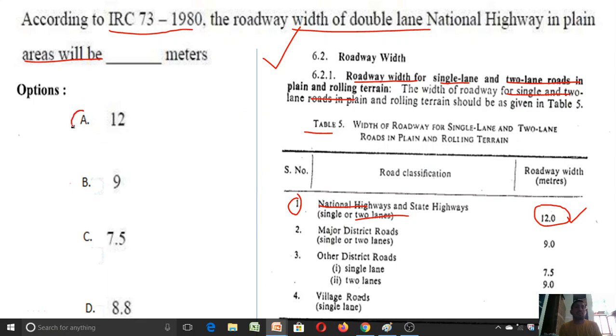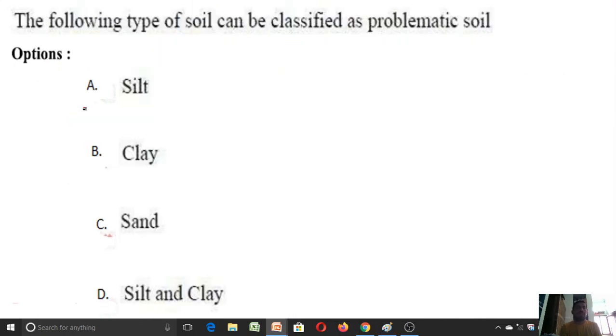We will discuss one more question here. The following type of soil can be classified as a problematic soil: option A is silt, B is clay, C is sand, and D is silt and clay. Among the given four sets of soils, the problematic soil is clay soil because it has low strength and high compressibility. In addition to this, when it absorbs water it changes its volumetrics. When you retain the water, the volume increases; when the water goes out, the volume decreases. That's why clay soil is considered as a problematic soil.